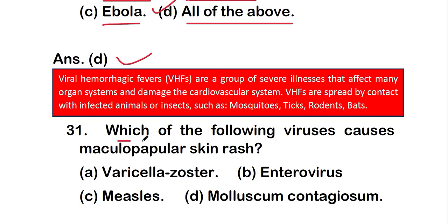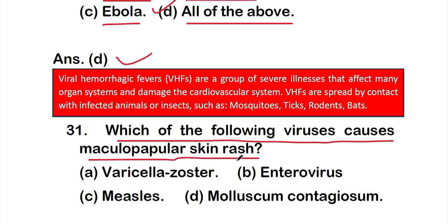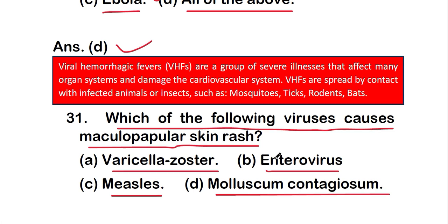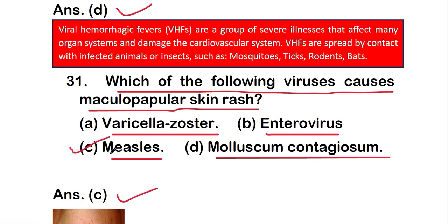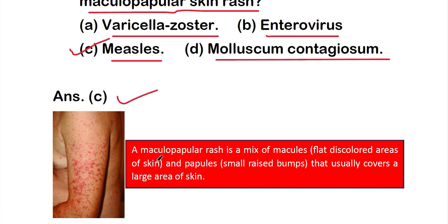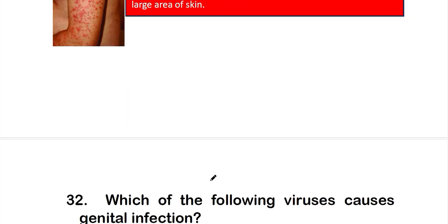Question 31: Which of the following viruses causes maculopapular skin rash? Option A: Varicella zoster virus, option B: enterovirus, option C: measles, or option D: molluscum contagiosum. The right answer is option C, measles. A maculopapular rash is a mix of macules — flat discolored areas of skin — and papules, which are small raised bumps, that essentially cover a large area of skin.